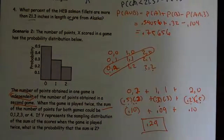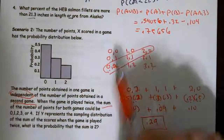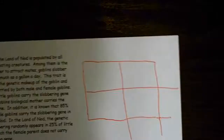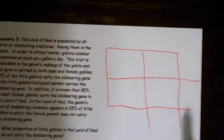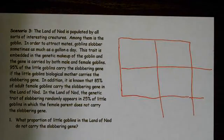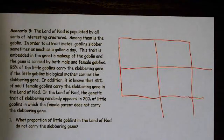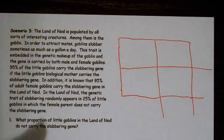If they tell you that you're playing a game twice, you need to set up the sample space — that takes a little practice. The land of Nod is populated by interesting creatures, among them the goblin. In order to attract mates, goblins slobber, sometimes as much as a gallon a day. This trait is embedded in the genetic makeup of the goblin and the gene is carried by both male and female goblins.